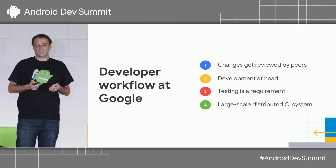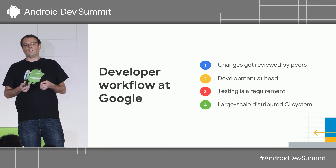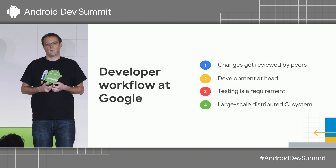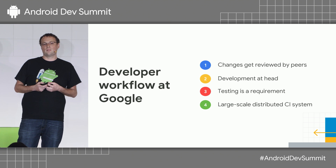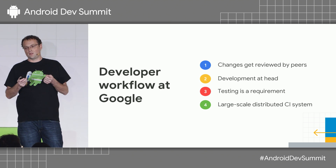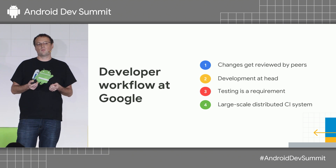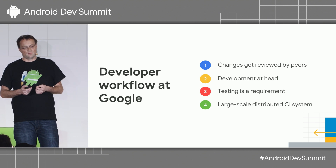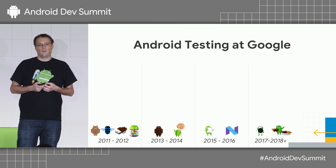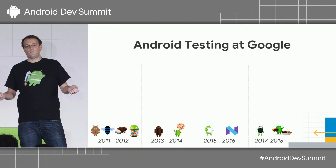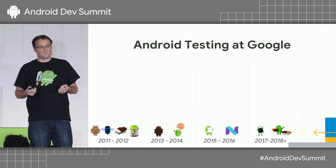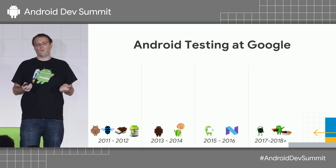To run tests, we use a large-scale distributed CI system which does not only run your tests, but also all of the tests from code that depends on your change. Another thing very unique about Google is that we have a strong engineering productivity culture. We have dedicated teams that only work on infrastructure, tools, and APIs to make developers productive. We are part of such a team, and we have been working on Android app testing at Google.